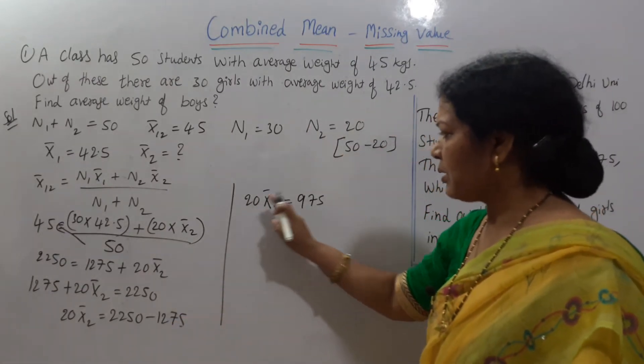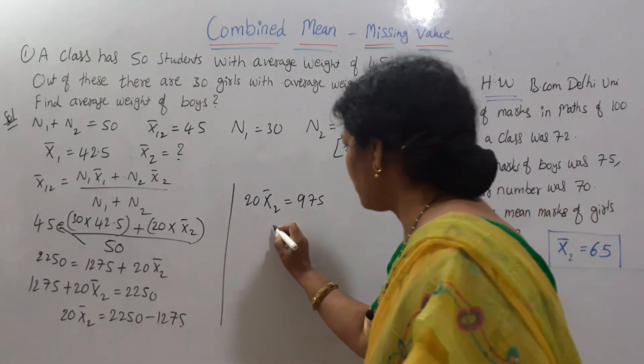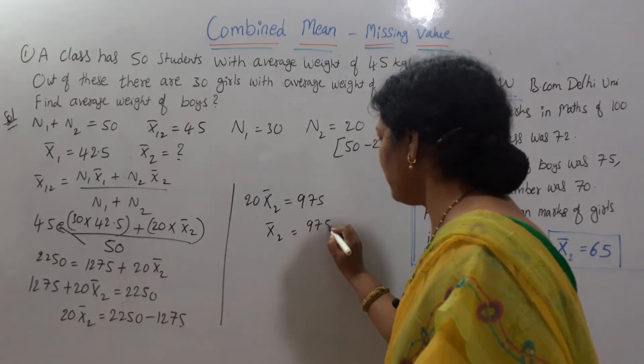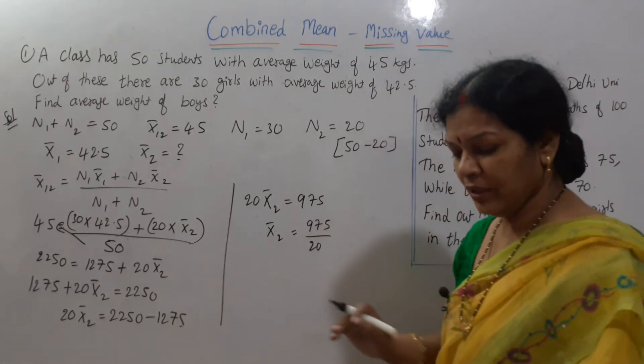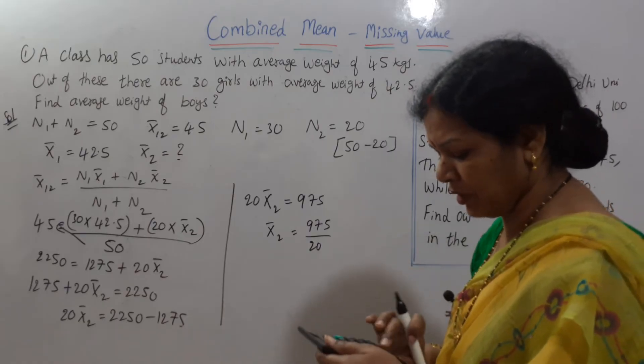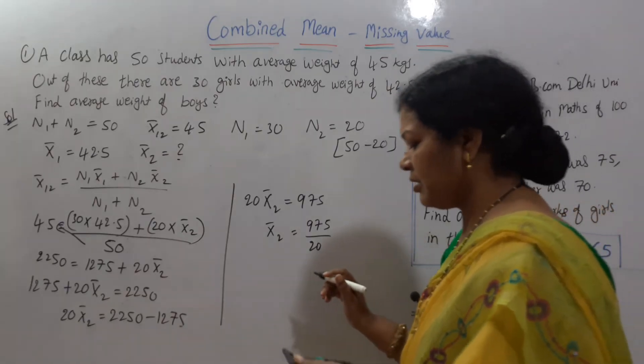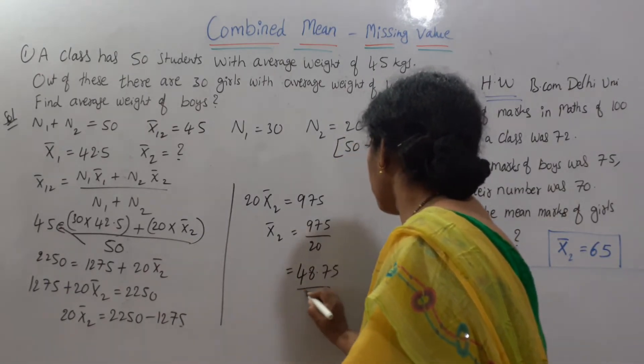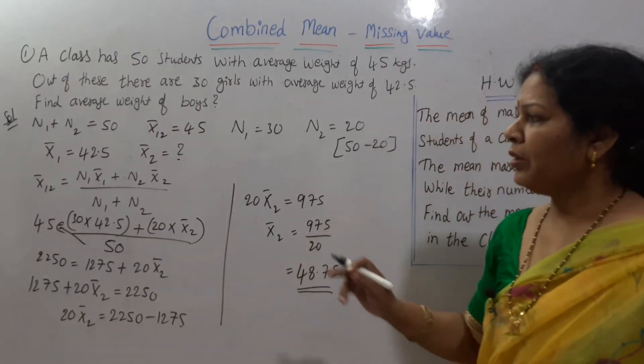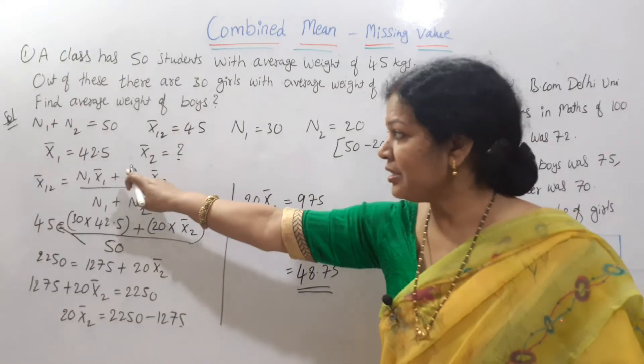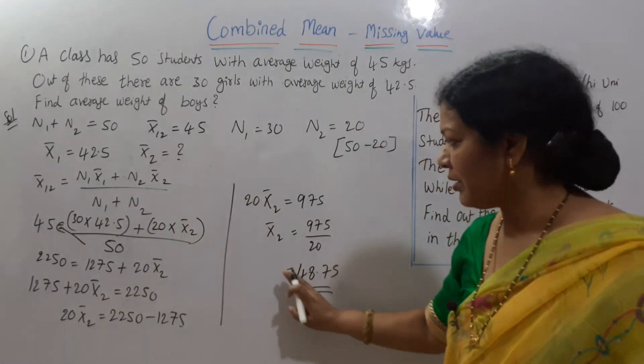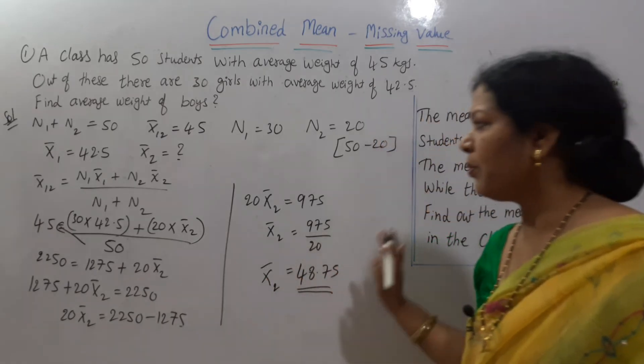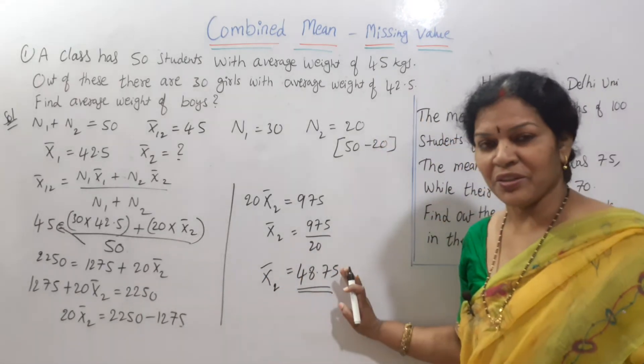20 X bar 2 is equal to 975. How do you got 975? Difference of these two. Now X bar 2 is this one. 20 you can just take it on that side. So X bar 2 is equal to 975 divided by 20, it comes to 48.75. So X bar 2 average of girls is 42.5, average of boys X bar 2 is equal to 48.75. We found it.